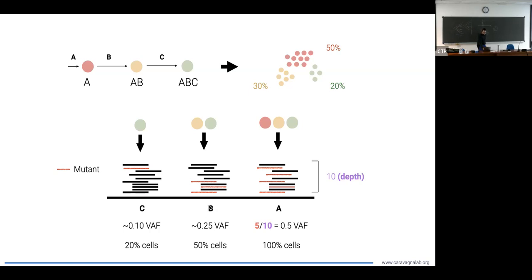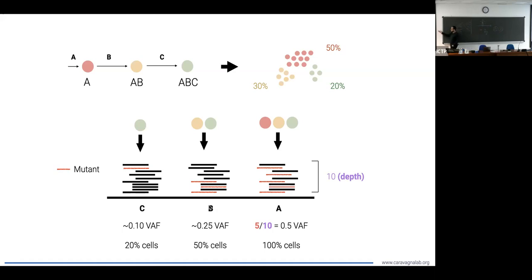Then you go to the mutation on B. That mutation is detected only in two out of three populations, because the red population is wild type for B — it does not have the mutation in B. So the red cells, if you look at the B mutation, they don't have the mutation. Your expectation for the variant allele frequency is lower, becoming 25%, because it's present in 50% of the cells. And if you go to mutation C, you will find even lower allelic frequency.